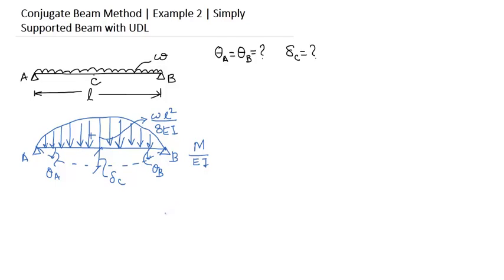According to the theory, the shear force at any section is the slope of the real beam at that section. So the shear force at A and B will be nothing but the reaction at A and B. So let us find out the reaction at A and B, which is obviously equal.